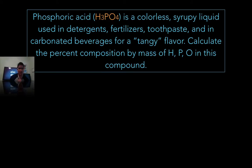Let's take a look at another problem here. A little bit more complicated. Phosphoric acid H3PO4 is a colorless syrupy liquid used in detergents, fertilizers, toothpaste, and in carbonated beverages for a tangy flavor. Calculate the percent composition by mass of hydrogen, phosphorus, and oxygen in this compound. So I'm looking for all three. So again, here's my general equation to find percent mass: my part over my whole, and then multiply that by 100 to get the percent.